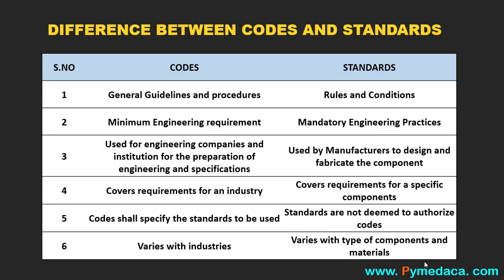Now let's discuss the differences between codes and standards. The first difference: codes specify general guidelines and procedures, whereas standards specify the exact rules and conditions to be qualified. The second difference: codes specify only the minimum engineering requirements, whereas standards specify the mandatory engineering practices and recommendations.